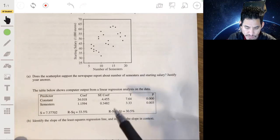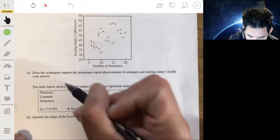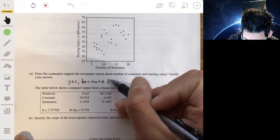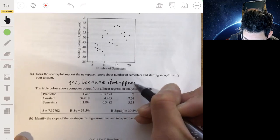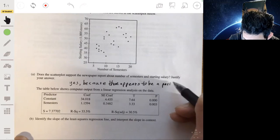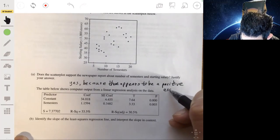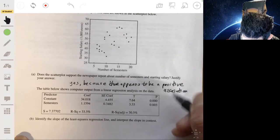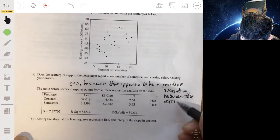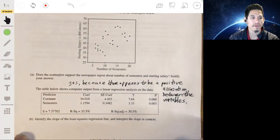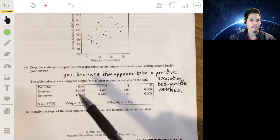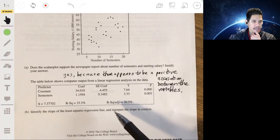Now, let's look at part B. Let me write that. Yes. Because there appears to be a positive association between the variables. All right. Part B.